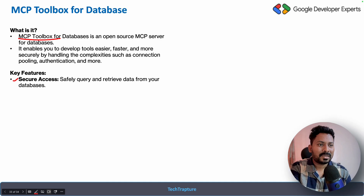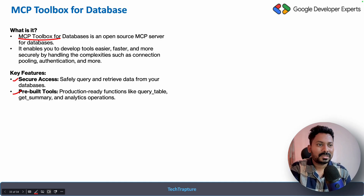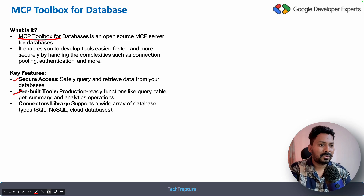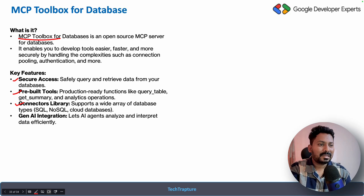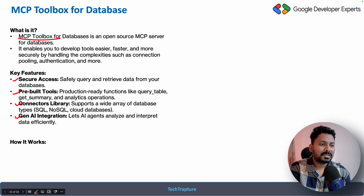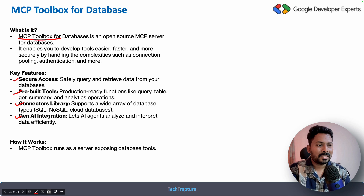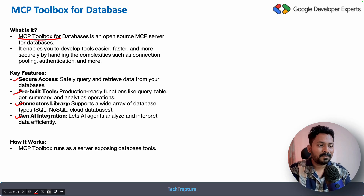The key features include secure access, pre-built tools so you don't need to build them yourself, and inbuilt connectors for connecting to NoSQL and SQL databases like BigQuery, Cloud SQL, PostgreSQL, and MySQL. It also has GenAI integration built in. Basically, the MCP toolbox runs as a server exposing database tools - it connects to the database and exports tools that can be used from your AI agent, which can list and call those tools.